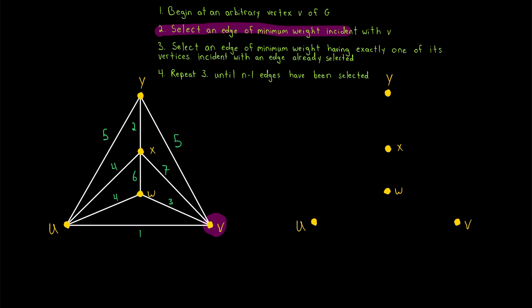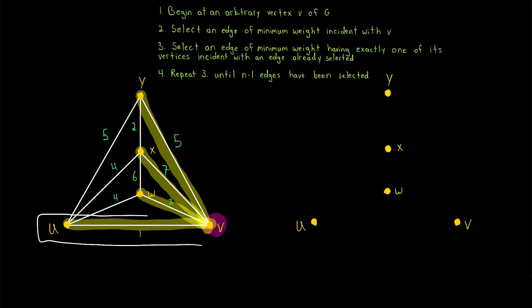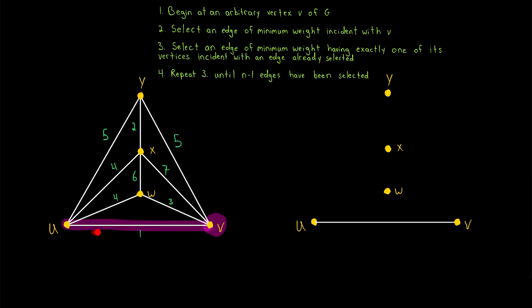Step two is to select an edge of minimum weight incident with V. We consider the four edges incident with vertex V, which have weights 5, 7, 3, and 1. We select the edge of minimum weight — clearly that's the edge of weight 1 joining V with U. That edge is highlighted and included in our spanning tree.